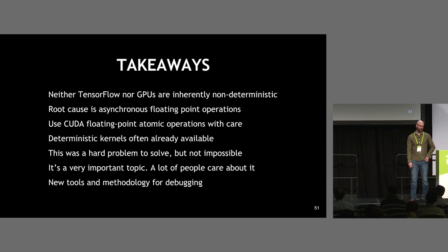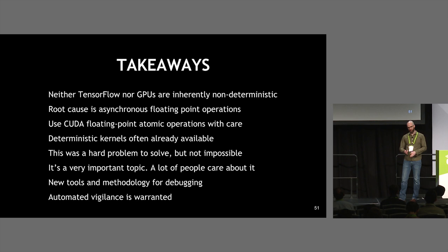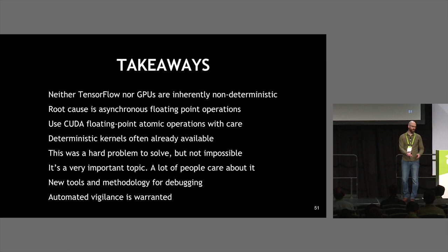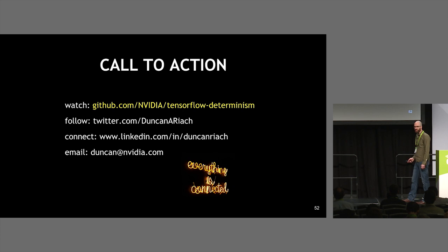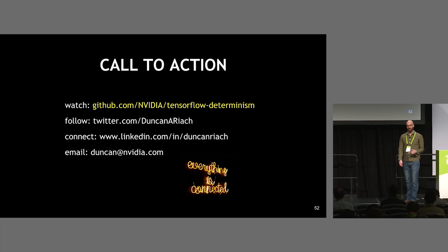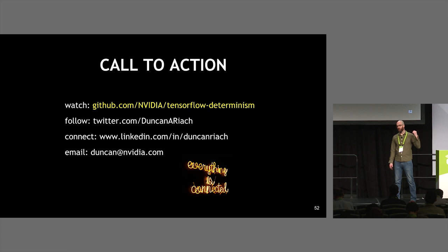We've developed new tools and methodology for debugging. It's important to remember that automatic vigilance is warranted — once we have determinism, we need to automatically check that it remains, rather than accumulating non-deterministic ops because it 'doesn't matter anyway.' I'd like you to watch the GitHub repo, which just went public this morning — currently there's just a readme, but the debug tool will be released there as soon as it has tests and is production quality. Connect with me and come talk to me — I'll be here all day today and tomorrow.